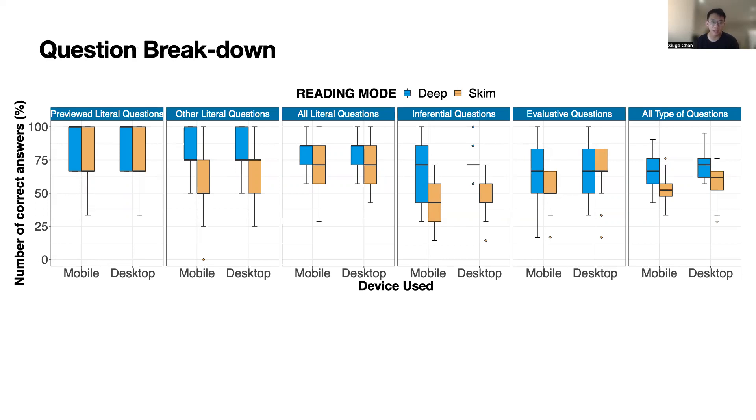It is interesting that we don't see such a huge difference in evaluative questions. We suspect this might be caused by participants being able to obtain high-level understanding about the article from skimming. Hence, they still have the ability to answer questions like what's the main problem of this story.